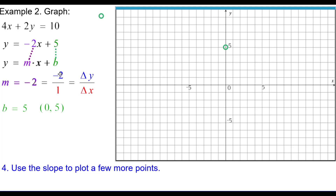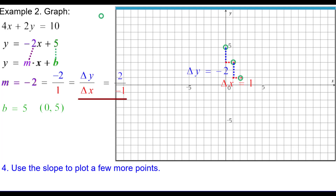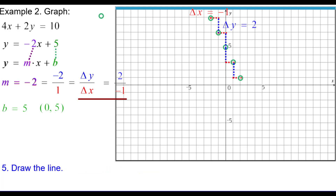Use the slope to plot more points. The slope is negative 2, written as negative 2 over positive 1 — change in y down 2, change in x right 1 — so the line slants downhill from left to right. Down 2, right 1 again for another point. Or write the slope as positive 2 over negative 1: up 2, left 1, and again up 2, left 1. With 5 collinear points, draw the line.